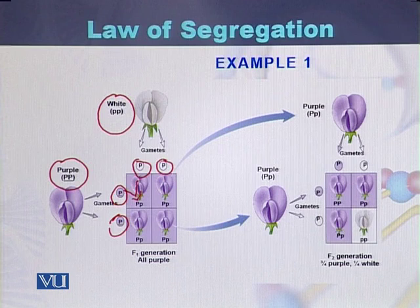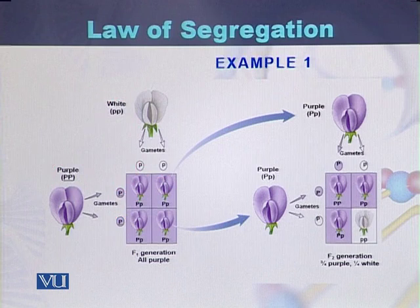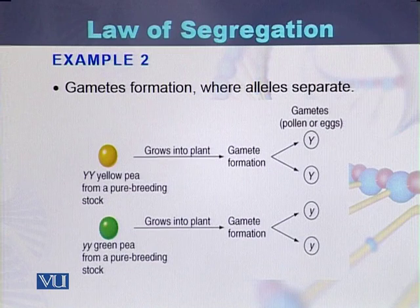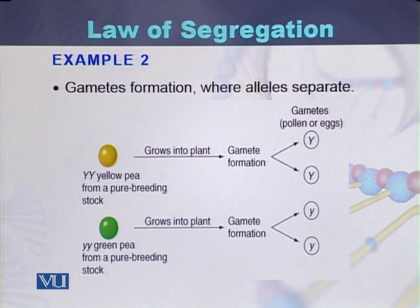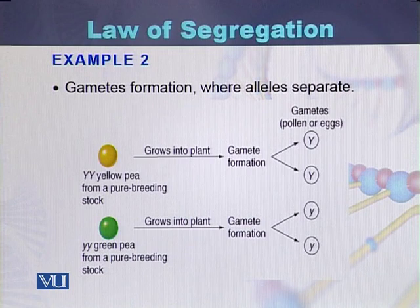This is the process of the law of segregation: during gametogenesis, gametes first separate from each other, and at the process of fertilization they unite with each other.